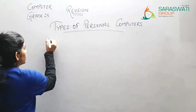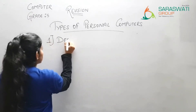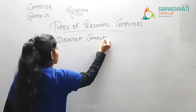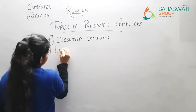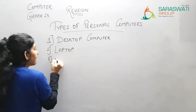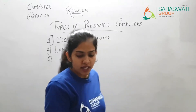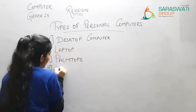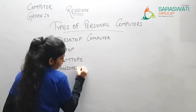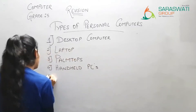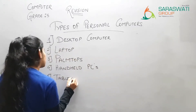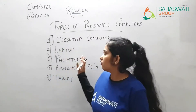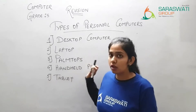Number 1 is desktop computer. Then after, laptop. Then palm tops. After that, hand-held PC. And the last one is tablet. So there are five types of personal computers: desktop, laptop, palm top, hand-held, and tablet.